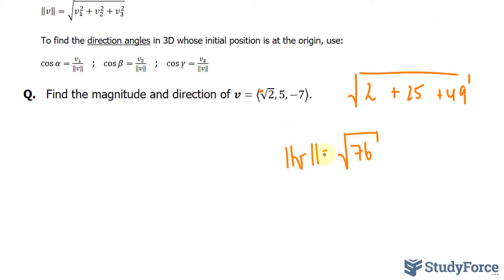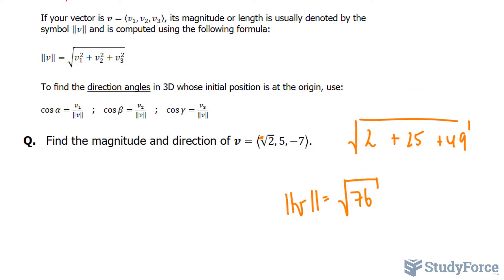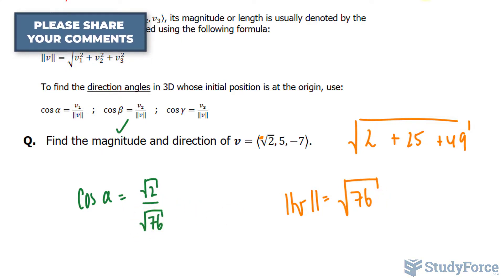At this point, we can use these formulas to find the direction. So we already found the magnitude. Let's start by finding the angle relative to the x component. We'll write down cosine alpha is equal to the square root of 2 over the square root of 76.